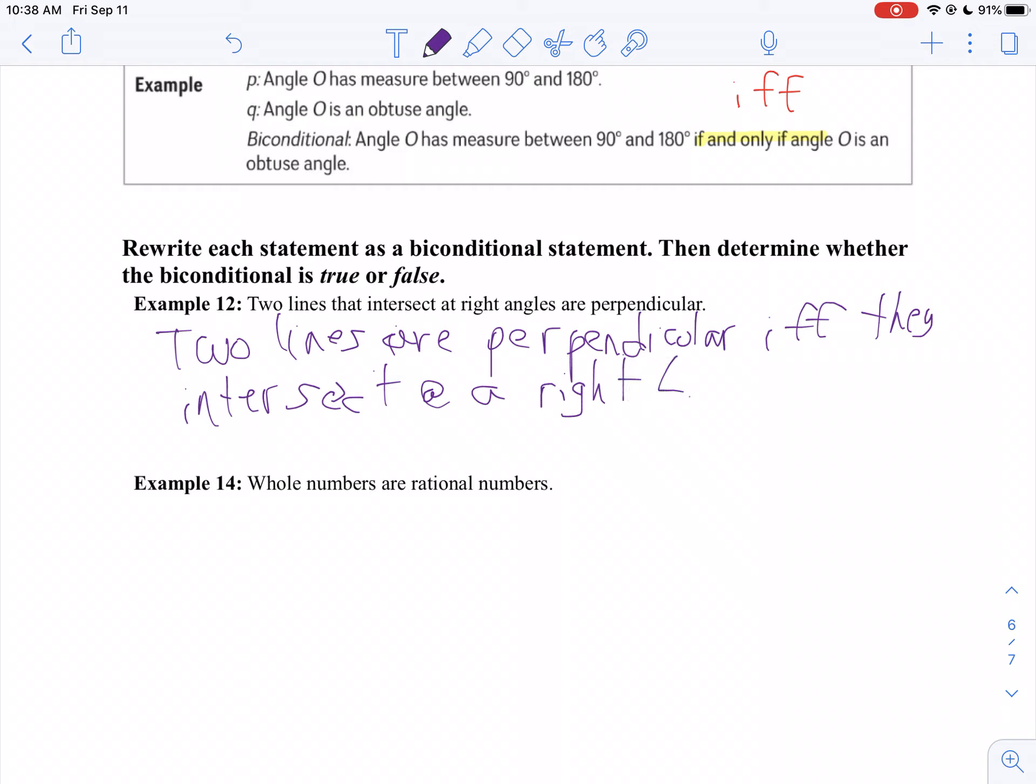I could have written this if two lines intersect at a right angle if and only if they are perpendicular. Now is that true? Let's go forwards. If two lines are perpendicular, must they intersect at a right angle?